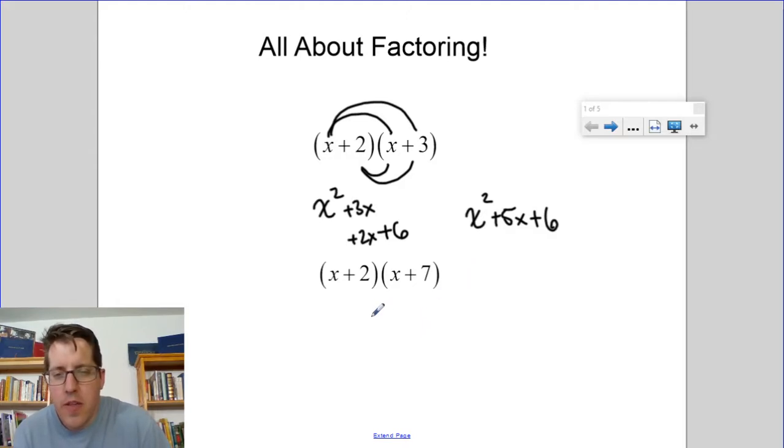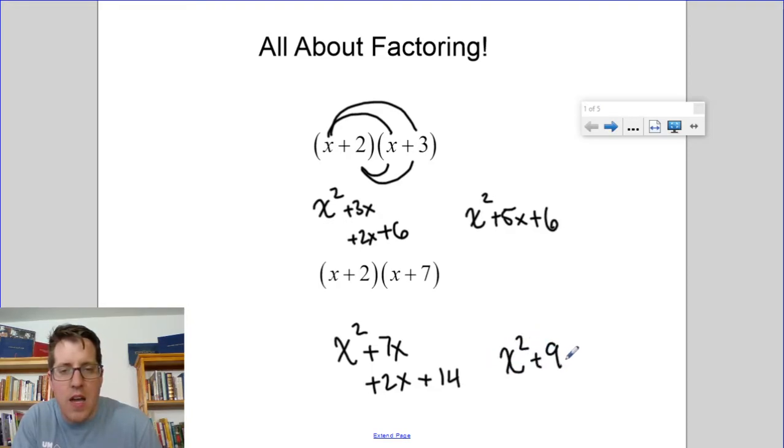To see how that works or to maybe catch the pattern, let's try the next one. Our firsts give us x squared. Our outers give us 7x. Our inners give us 2x and our lasts give us 14. So this multiplies out to x squared plus 9x plus 14.